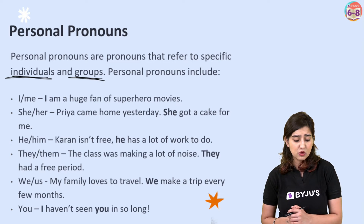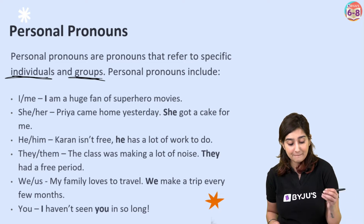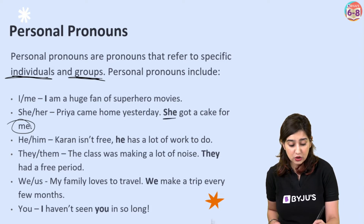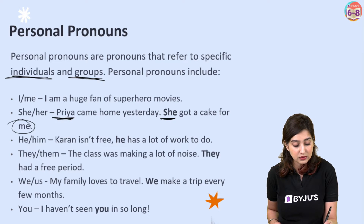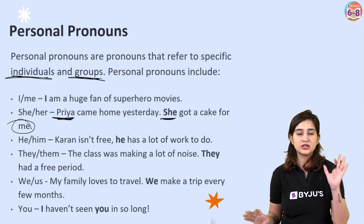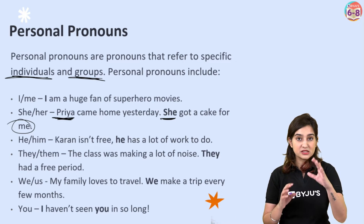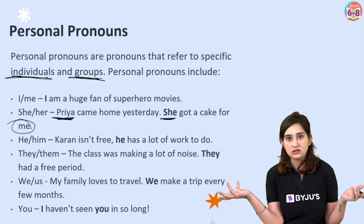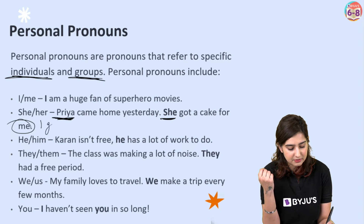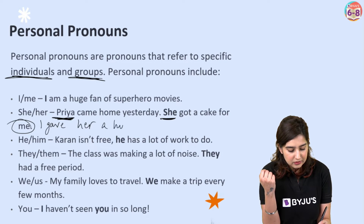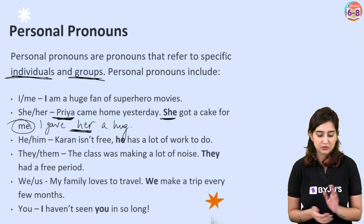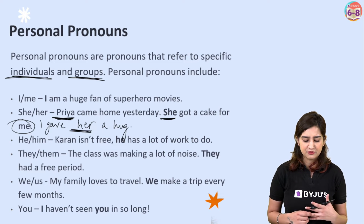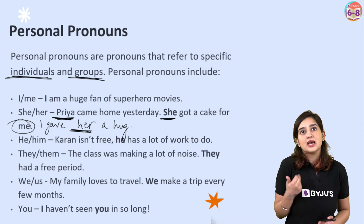Similarly, he and him — same concept as she and her: 'Karan isn't free. He has a lot of work to do. Maybe I will help him.' They and them — ab yeh plural ho gaya, so abhi tak jo hum dekh rahe the woh singular tha, ab hum plural mein aa gaye: 'The class was making a lot of noise. They had a free period. The principal was going to give them a nice scolding.'